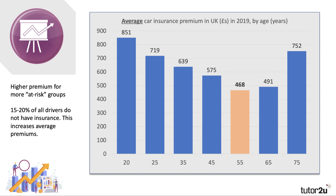Keep in mind the average premium hides variations around the mean. Typically, younger drivers face much higher car insurance premiums — paying on average £850 per year. That's partly because they are more at risk: less experienced drivers, the impact of testosterone behind the wheel, social pressures to drive at speed. A black box can help monitor driving habits and bring down premiums quite a bit.